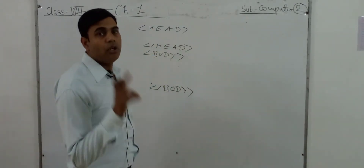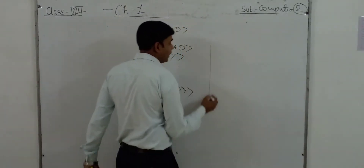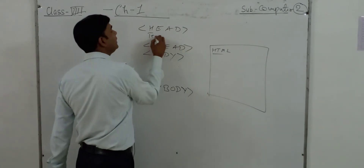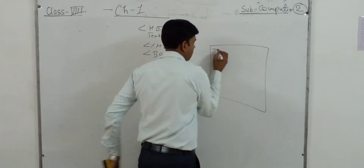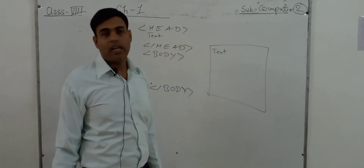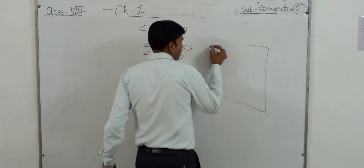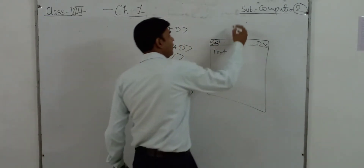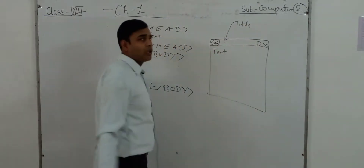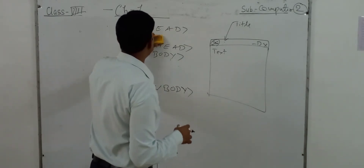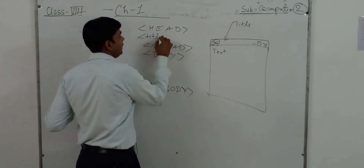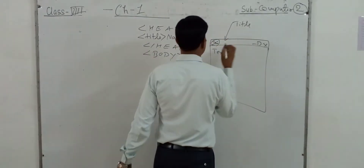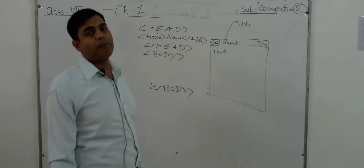The head tag contains the heading of the page, whatever heading you want to give. Any text you place there will appear in the browser tab heading. If you want to add a title, it will appear in the title bar of the browser. Inside the head tag, you use the title tag — whatever you write between the opening and closing title tags will appear in the title bar.